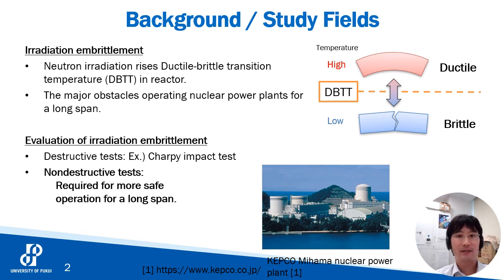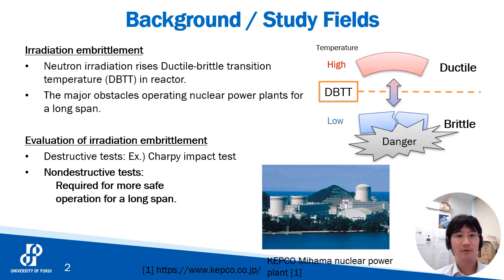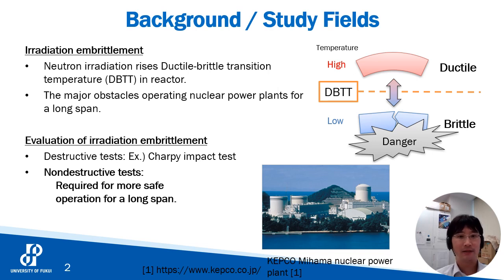On the other hand, it is known that many steels exhibit brittle properties below a certain temperature. This temperature is called DBTT, ductile-brittle transition temperature. Naturally, it is very dangerous to operate at a temperature lower than DBTT. The important thing is that the DBTT increases when these steels are irradiated by neutrons, because neutron irradiation produces a microstructure in the metal that hardens the material.